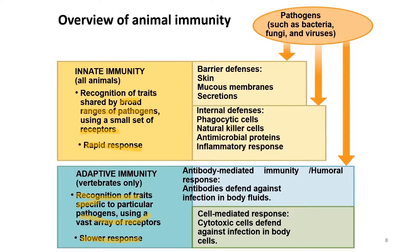Innate immunity can be classified into barrier defense and internal defense. Barrier defense includes several parts of the body: skin, mucous membranes, and secretions. Internal defenses involve phagocytic cells, natural killer cells, antimicrobial proteins, and inflammatory response. For adaptive immunity, the antibody-mediated (humoral) response works alongside the cell-mediated response.